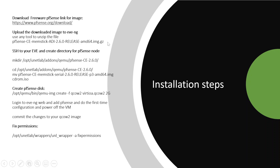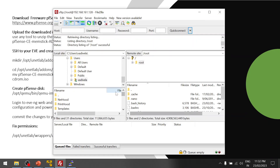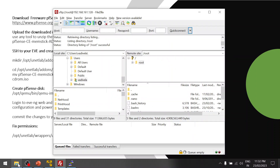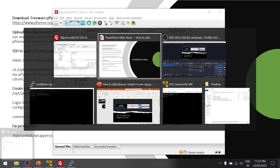Once that is done, log in to EVE-NG using SSH, then create a folder under the qemu folder for pfSense. The image I am using is CE 2.6.0, the latest version. I already have that downloaded image, so let me copy and paste it quickly so that it is easy for user access.